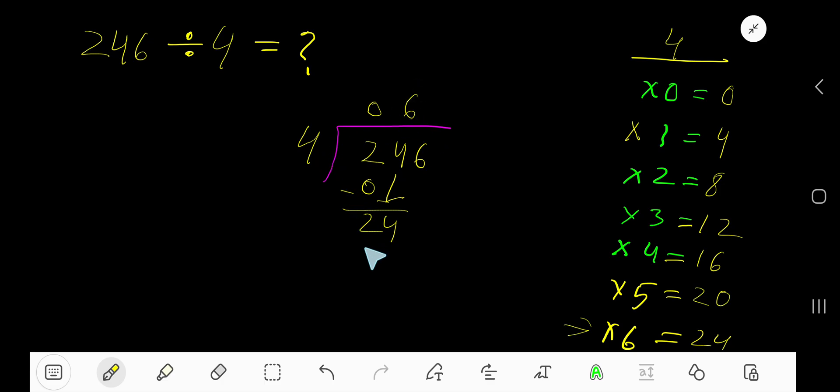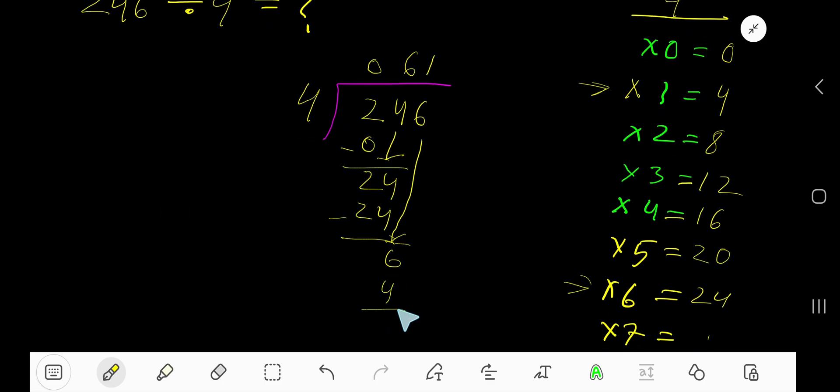Bring down this 6. 4 goes into 6 how many times? 1 time (2 times would be 8, which is too big). Write 1. 1 times 4 is 4. Subtract to get 2. Here 2 is the remainder, so our answer is 61 remainder 2.